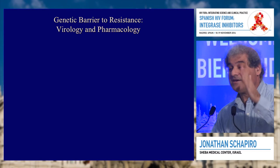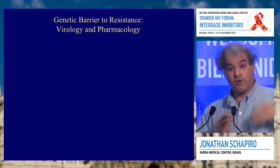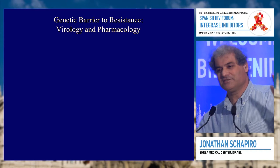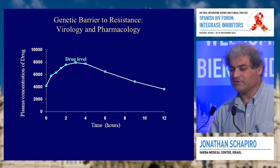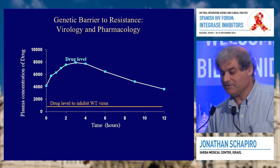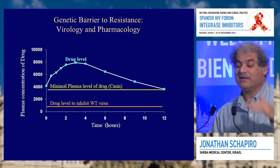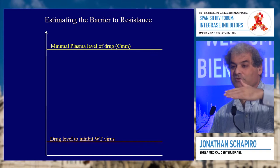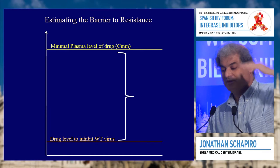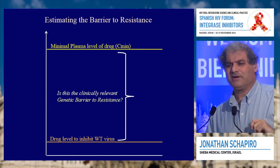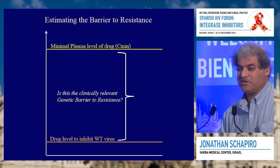Why do we care about making it so small? Because we want a high genetic barrier. A genetic barrier is a function both of virology and pharmacology. We have our drug level, which changes over time. We want this to be above the level needed to inhibit the virus — the drug level needed to inhibit wild-type. We want to be above it all the time, even at our Cmin, our lowest level.